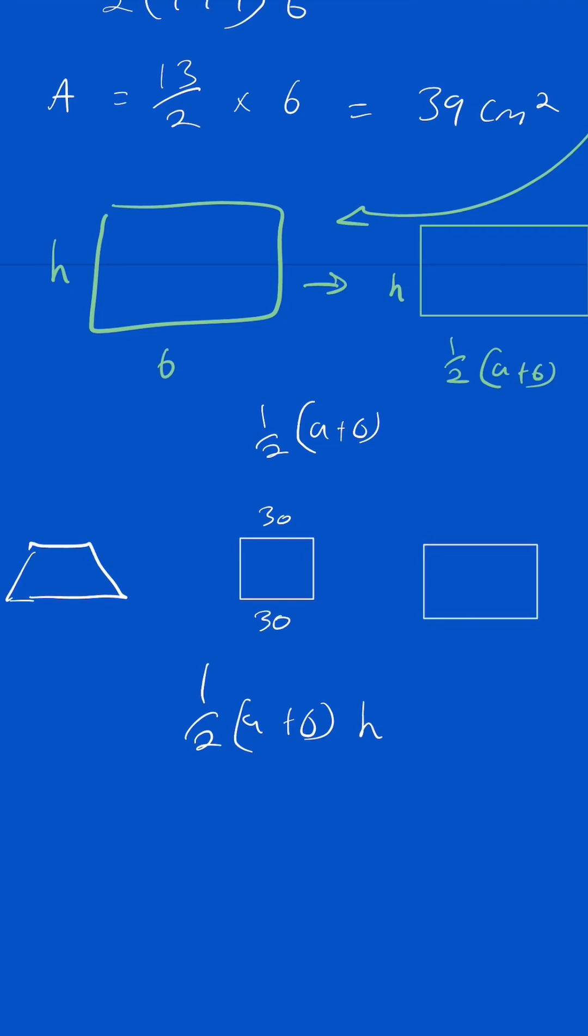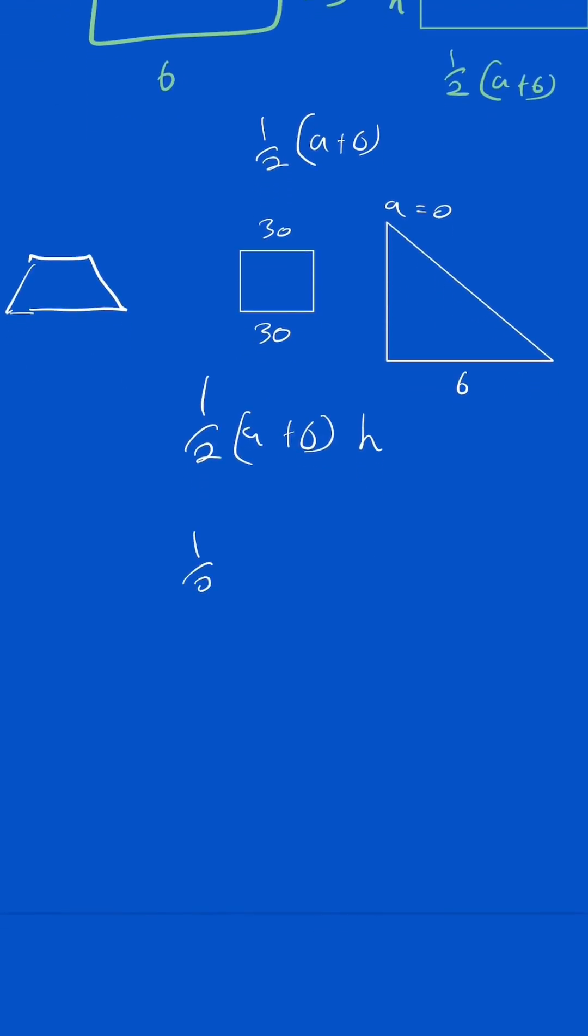Why does it work for a triangle? Well, technically, a is at the top and b is at the bottom. A is zero at the top - you don't have a side length there. And what happens in the formula? If a equals zero, you end up with a half b times height, b being the base. A half base times height, which is the formula for the area of a triangle.